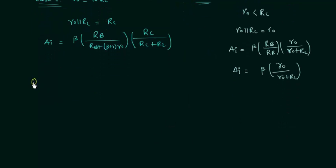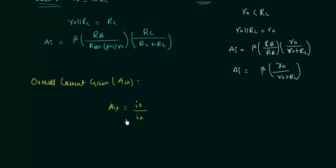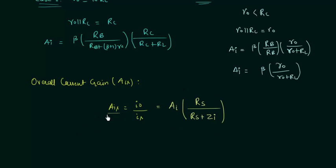Now we will find out the overall current gain, represented by AIs. It is equal to the ratio of output current to source current, similar to the H parameter overall current gain. It equals Ai × [RS / (RS + Zi)]. This result was derived in the H parameters lecture, so please refer to that if needed.